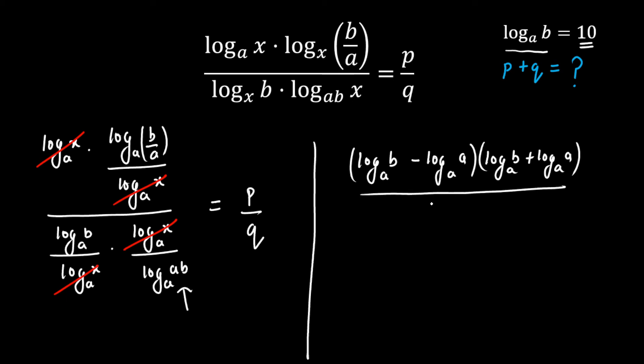Now let's calculate this. Since this information is given, I'm going to equate this as (10 minus 1) multiplied by (10 plus 1). Log a to the base a is 1, whole divided by 10. This will be equal to p by q.